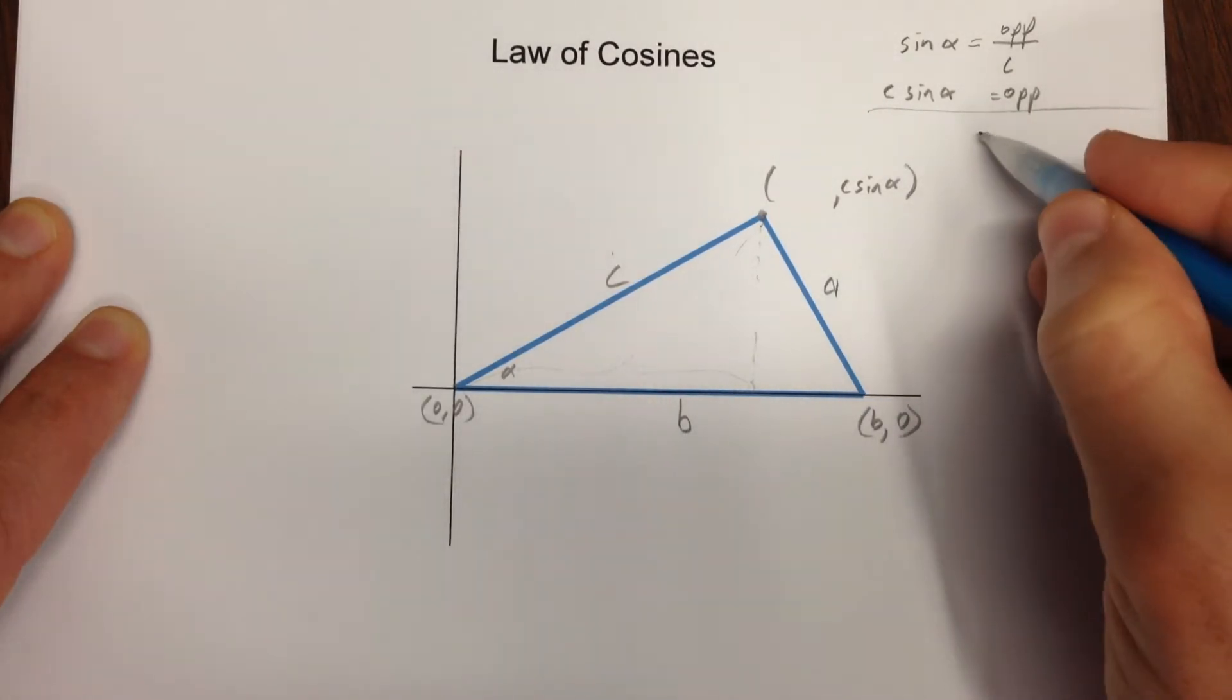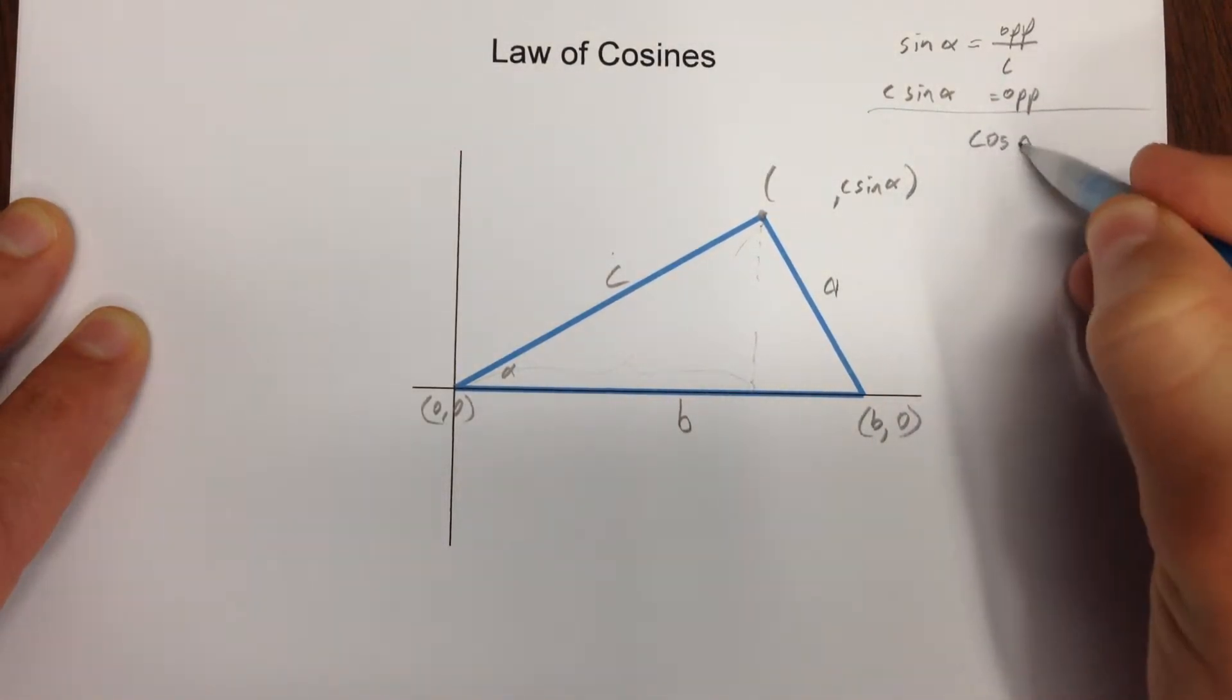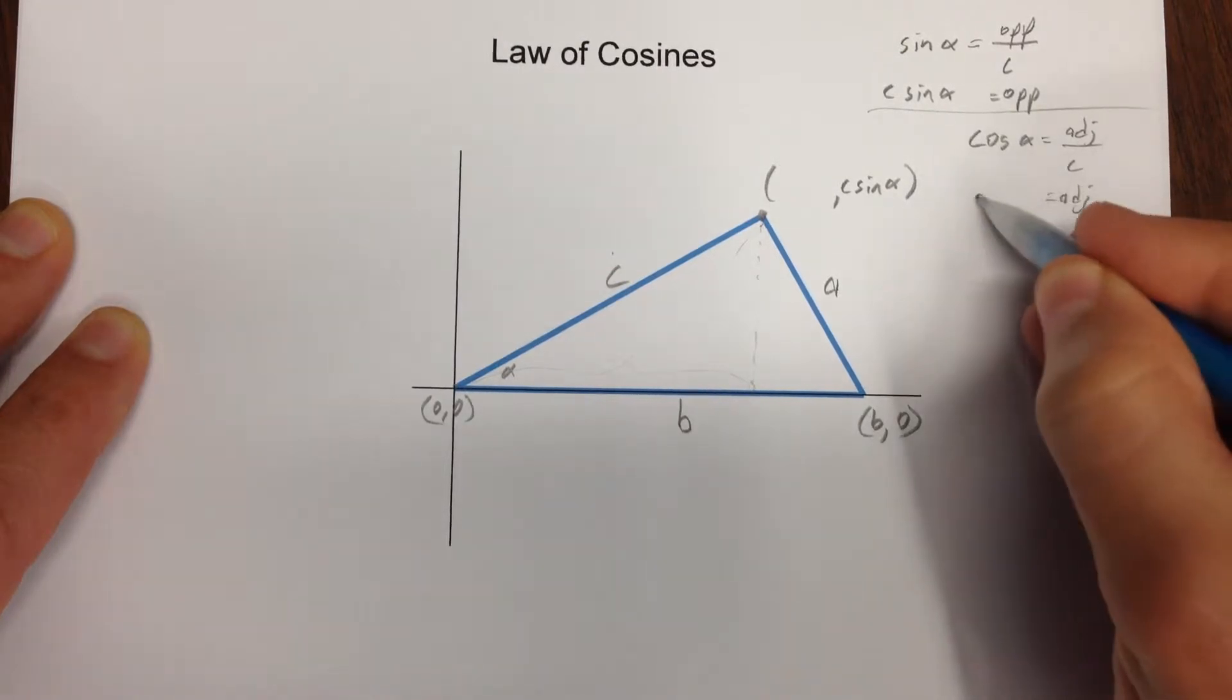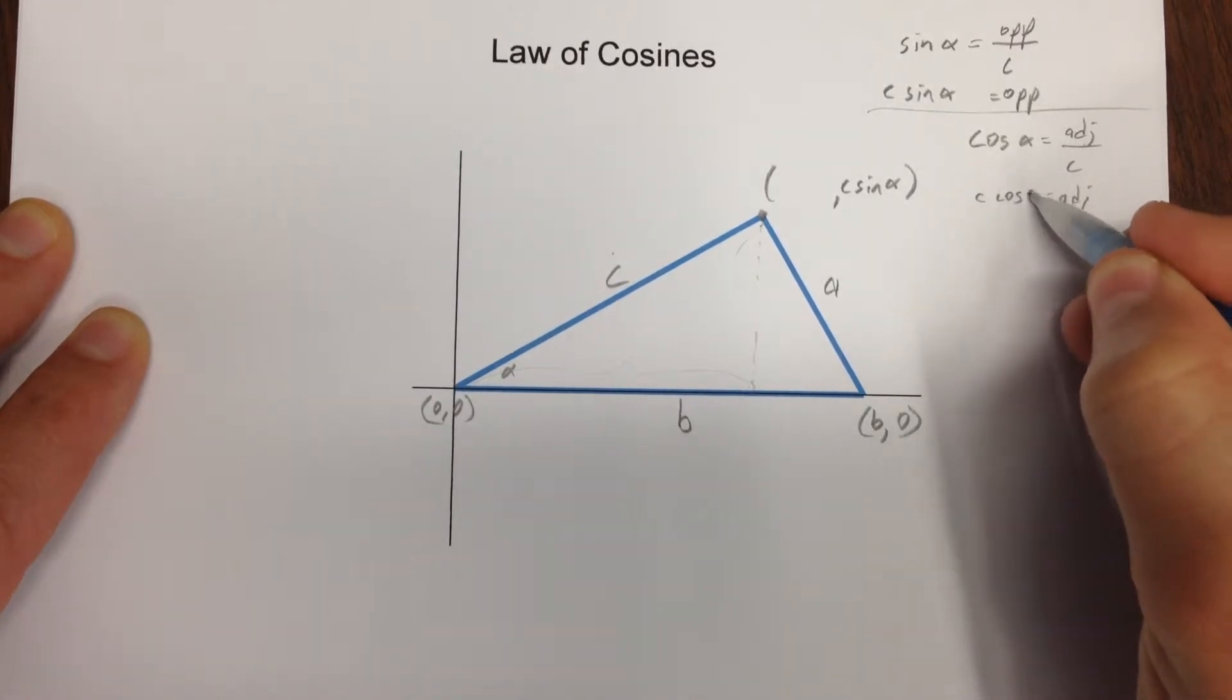Similarly, I could say cosine alpha is going to be the adjacent side over C. So the adjacent side would be C cosine alpha.